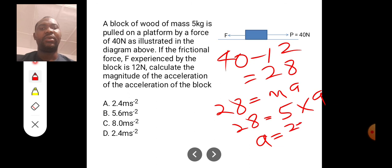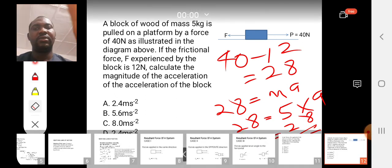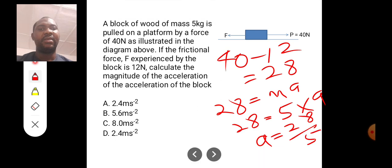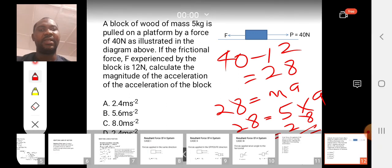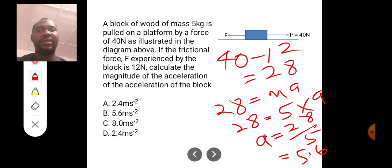That means 28 is equal to the mass here is 5 kilogram multiplied by acceleration. So acceleration here will be 28 divided by 5, and 28 divided by 5 is going to give us 5.6. So the answer to this question is 5.6 meter per second squared, which is B.